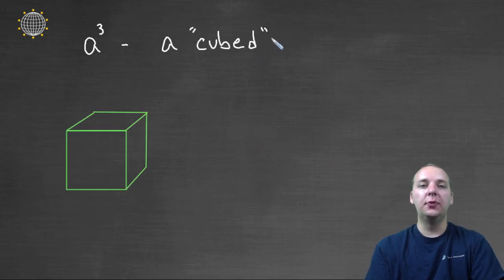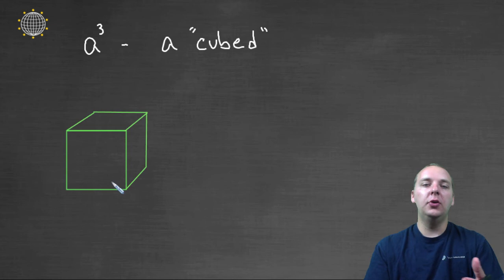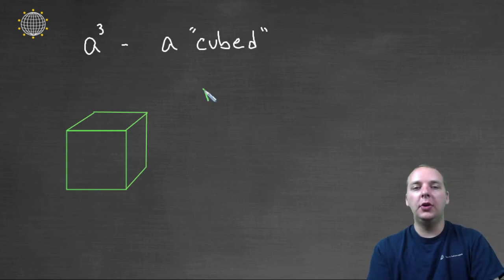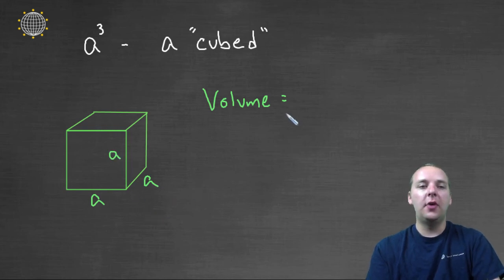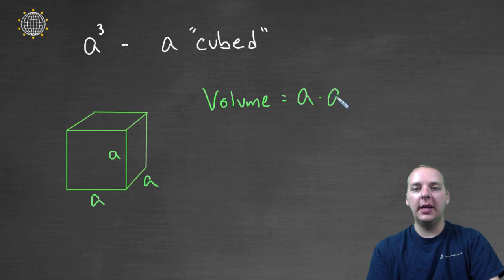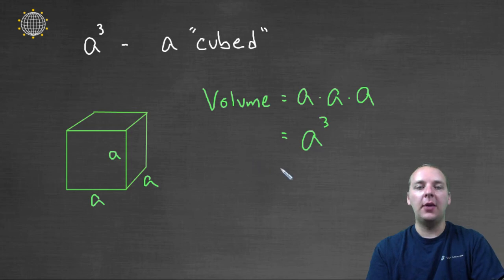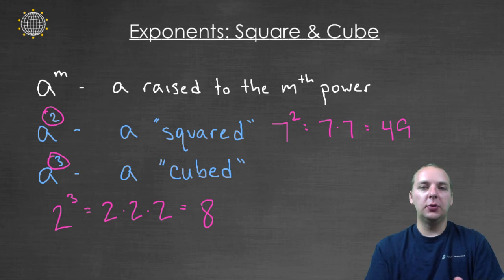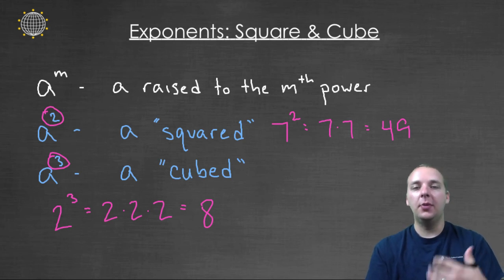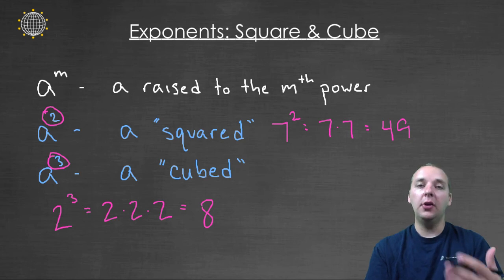Something similar is true for A to the third power. If you consider a cube, the volume of a cube would be length times width times height. But if this is a cube where the length, the width, and the height are all A, then the volume would be A times A times A, which would be A cubed, or A raised to the third power. That's where these words come from — squared and cubed. Just remember: if something is raised to the second power, that number is squared, and if a term is raised to the third power, that term is cubed.